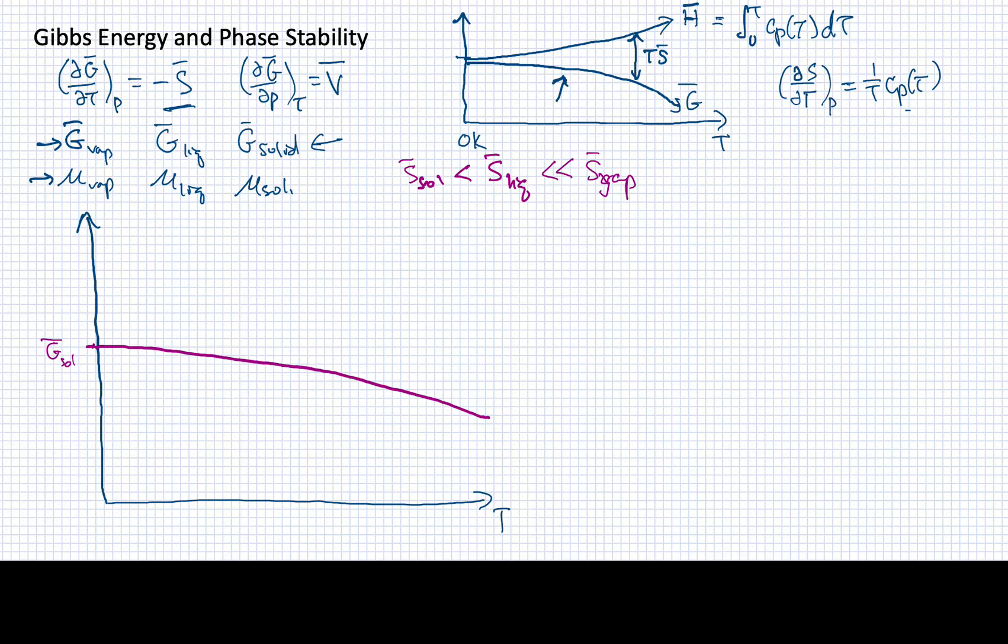Now, the liquid, and I'll draw this one in blue, is going to start a little bit higher than the solid. Now, why is that? Well, remember, over here on this far axis, if we're talking about 0K, these are both equivalent to enthalpies. And we know that there is an enthalpy change in going from a solid to a liquid, and that's also going to be true at 0K, although it's never been measured. But we can think of this difference here as being delta fusion of enthalpy that separates these two marks.